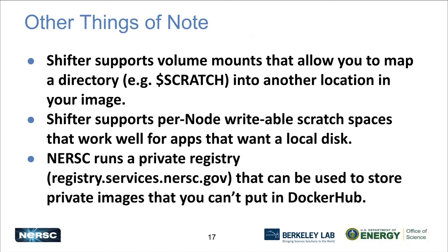We mount home directories and global file systems automatically, so those are already visible, and you typically start in the directory you started Shifter from. There are some Dockerfile directives not supported by Shifter, but those top two are the main ones people typically hit. Just like with Docker, you can do volume mounts — you can take a path outside Shifter and make it present inside the container at a path of your choosing, so your data can always show up as /data for example. There's also a per-node write cache feature that creates something like local disk on a node — useful for things like running a database on a compute node, or Spark, which assumes local disk.